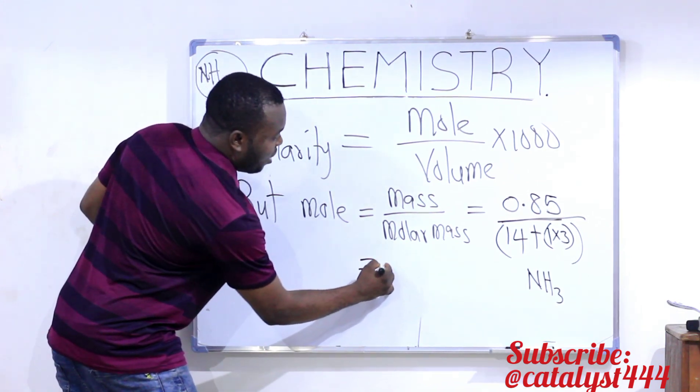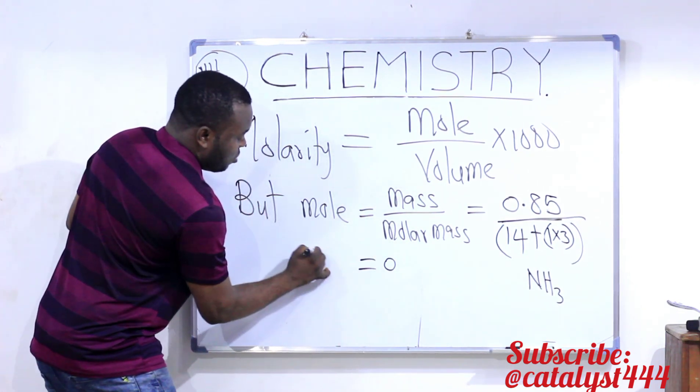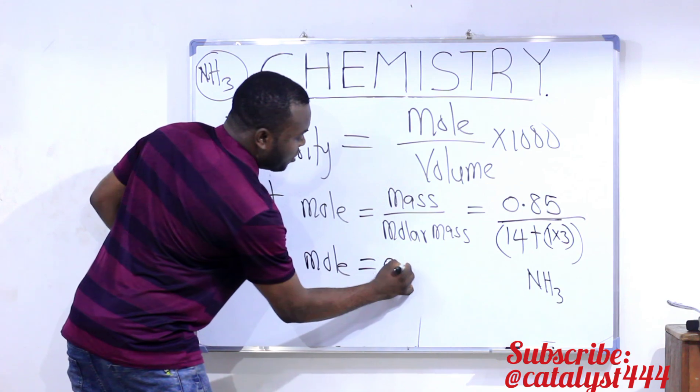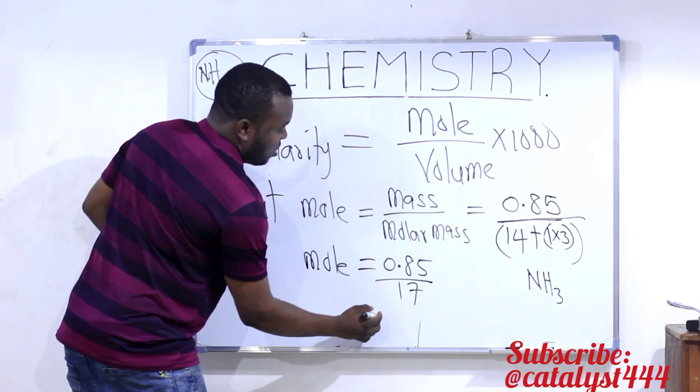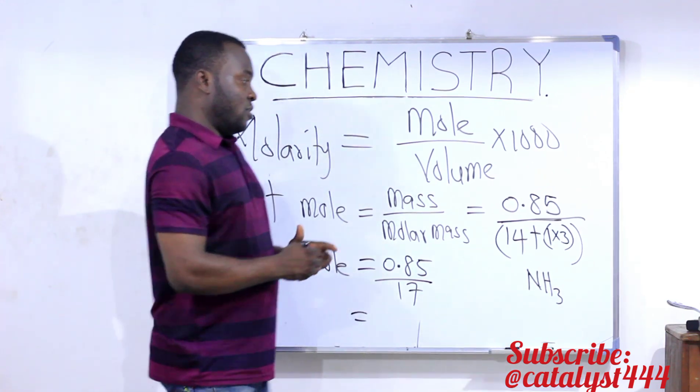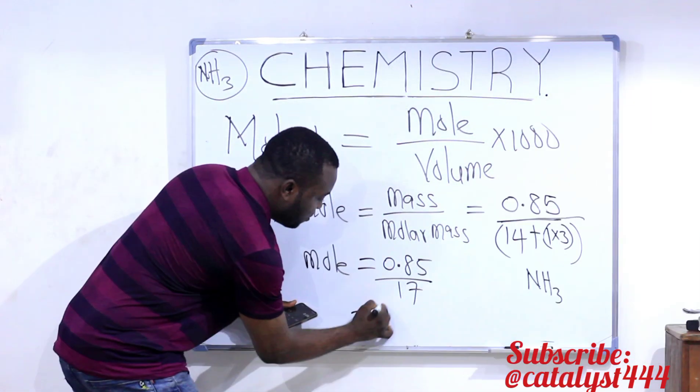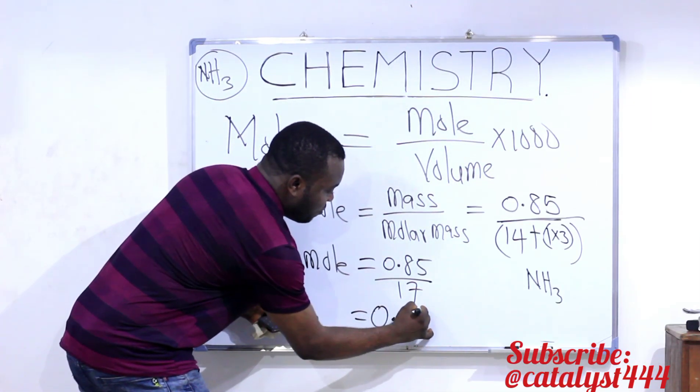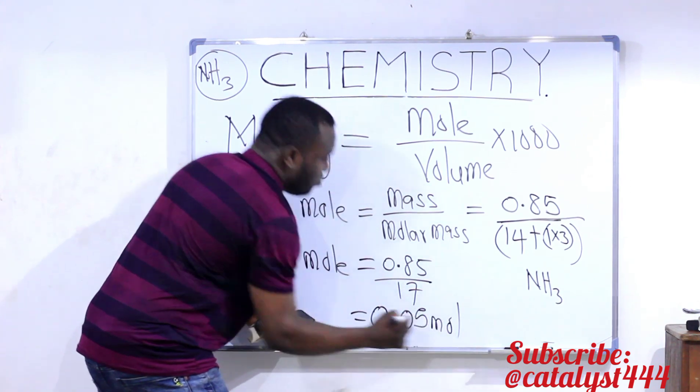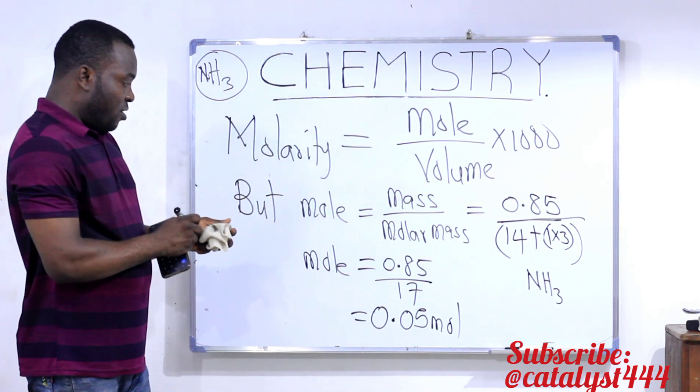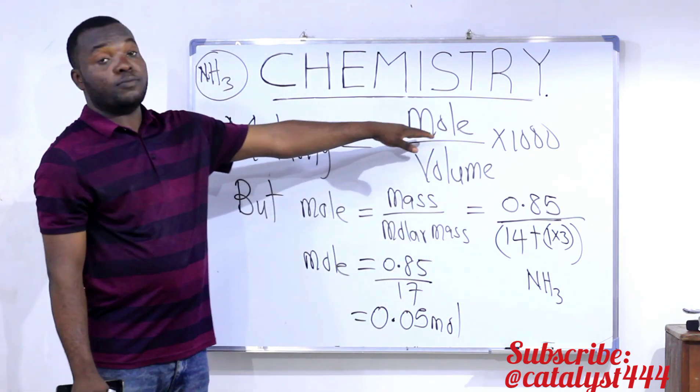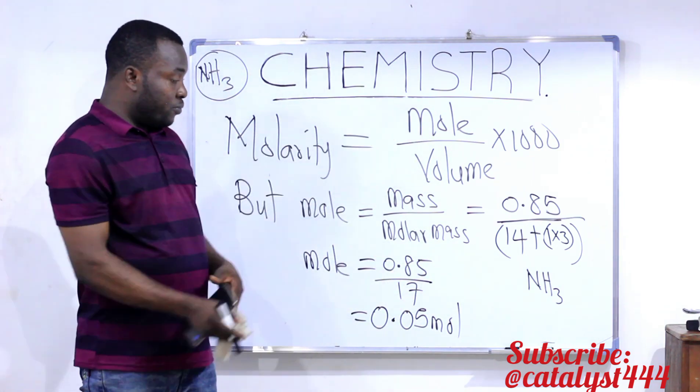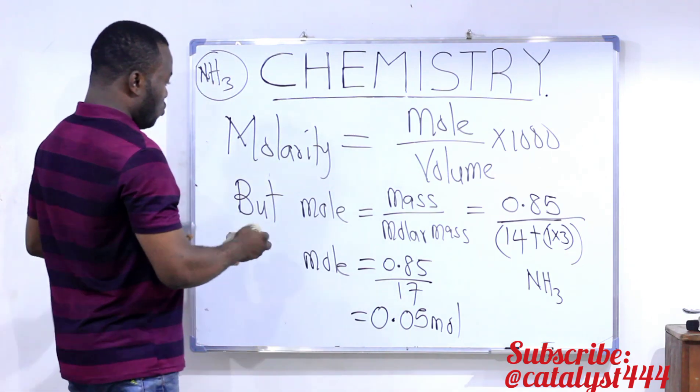Now, if we do this, we'll have mole to be 0.85 divided by 17. And that will give us, from the calculator, to be 0.05 mole. Now, this is not the final answer. All we did was to find mole. Now, we can proceed with the work.